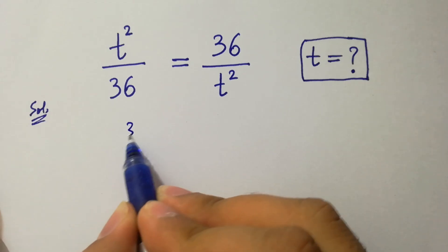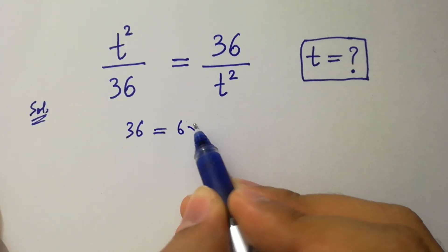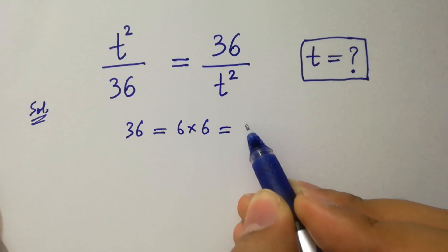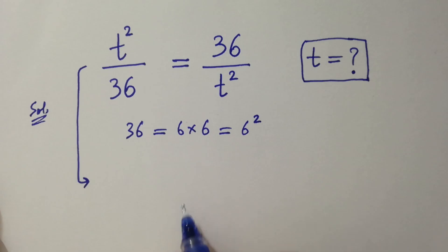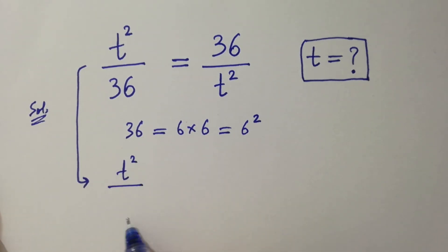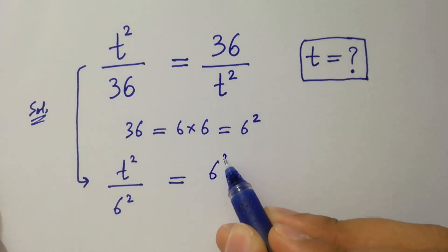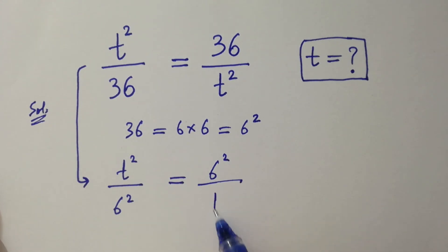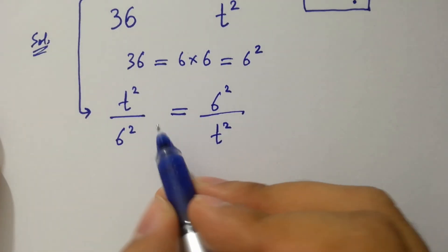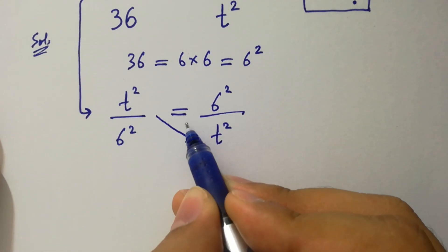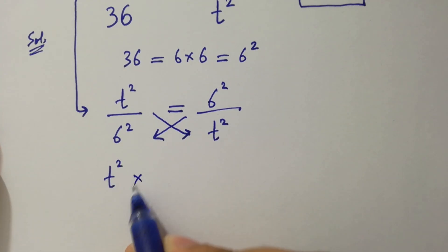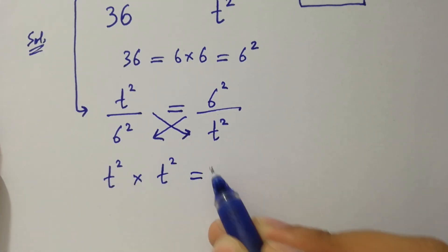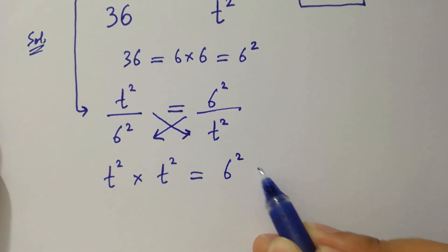Since 36 equals 6 times 6, which equals 6², then it will be t² over 6² equal to 6² over t². By cross multiplication, we have t² times t² equal to 6² times 6².